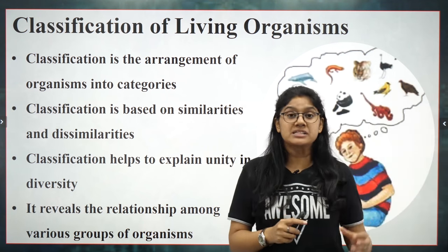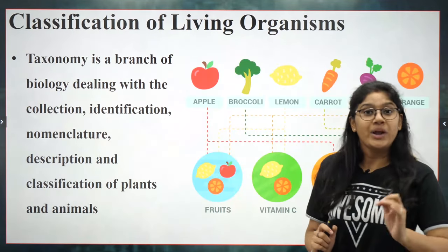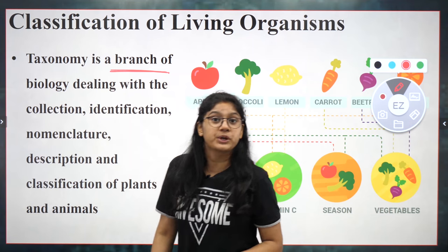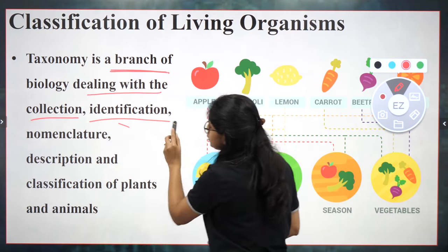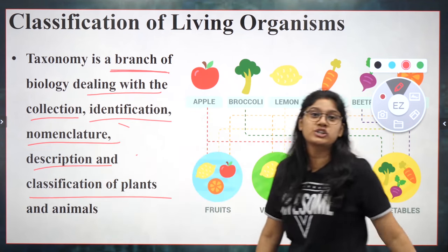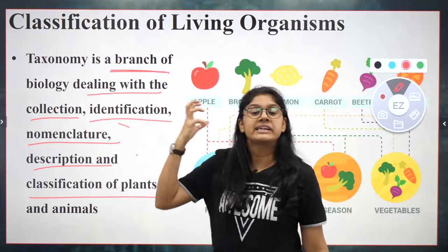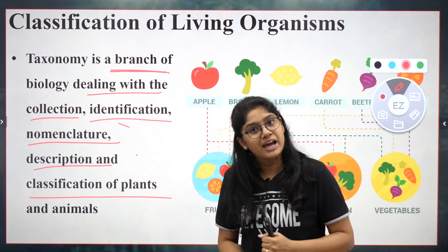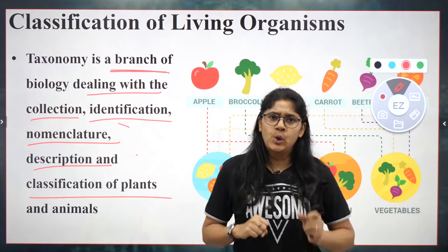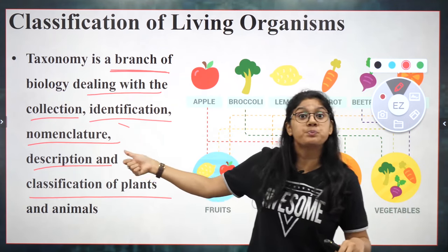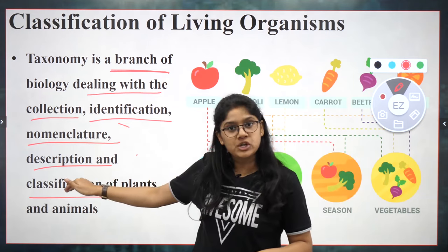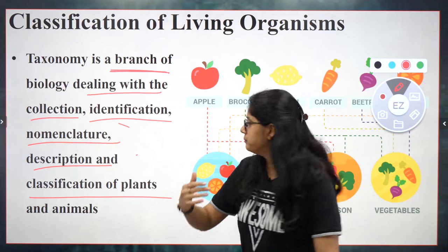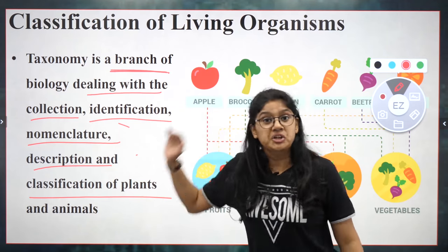A very important term that can come in your examination is taxonomy. Taxonomy is a branch of biology which deals with the collection, identification, nomenclature, description, and classification of plants and animals. Collection — we have to collect information about the animal. Identification — we have to identify whether it's a plant or an animal. Nomenclature is super important — that's naming. Description — telling about the organism, e.g., a human has two legs, two hands, two ears, one nose. And finally, classification.